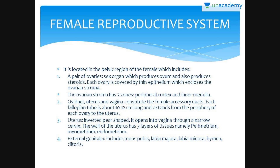The ovary is the major sex organ and it produces the female gamete known as ovum. It also produces several steroid hormones. The ovaries are located in the lower abdomen.